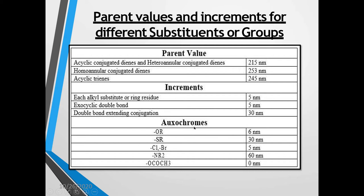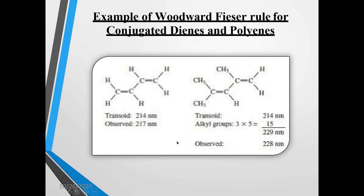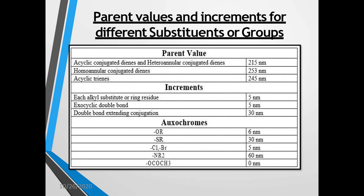For oxochromes, depending on the type, the corresponding values are added to the base value — such as alkoxy group, thioalkyl groups, halogens, NR2 alkyl amines. Apart from this, if there is a solvent, that is also taken into consideration. This is the Woodward-Fieser rule for simple conjugated dienes or trienes.